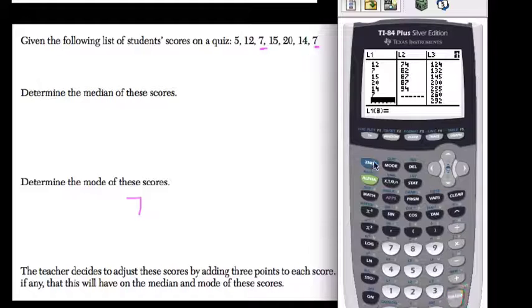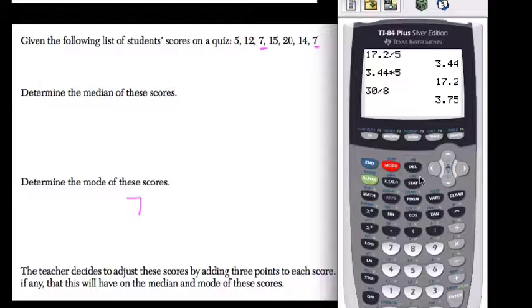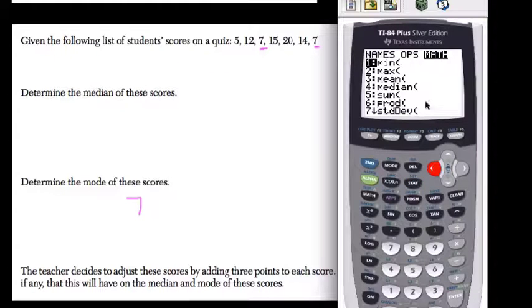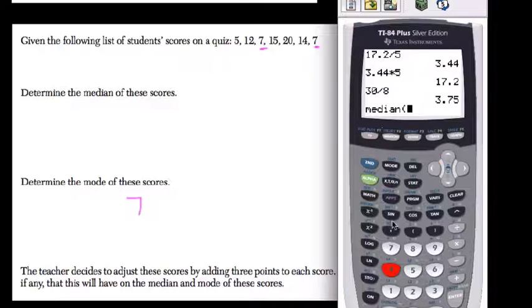What the calculator can do, once I hit second quit, is analyze that data really quickly. I hit second stat. There's a math option right here. I can find the median or mean or whatever I want. I'll select choice 4 for median.